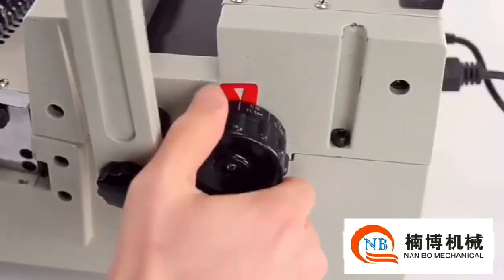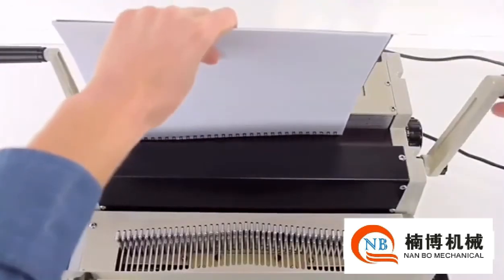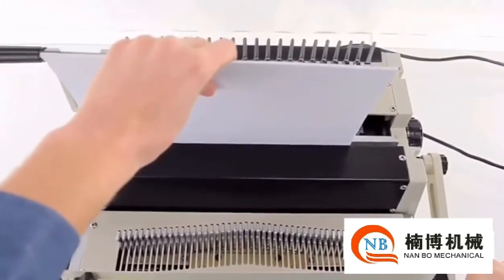On the right is a wire size adjuster for the closer. Turn it to the correct size. With your wire on the closer, pull the handle down and pull the right lever all the way.